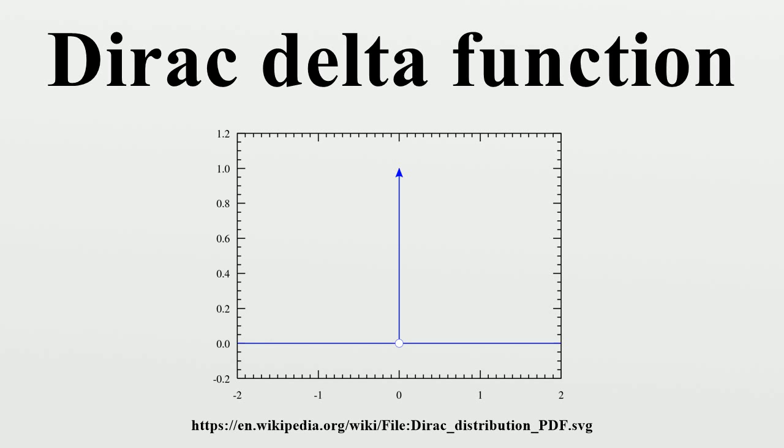In many applications, the Dirac delta is regarded as a kind of limit of a sequence of functions having a tall spike at the origin. The approximating functions of the sequence are thus approximate, or nascent, delta functions.